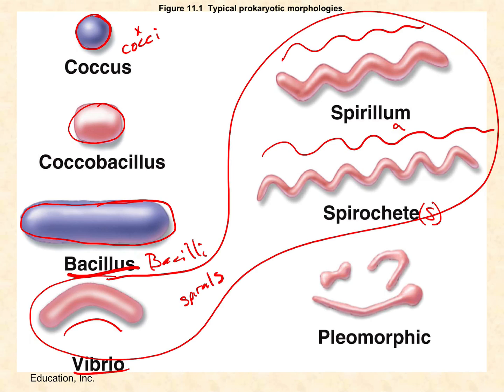Pleomorphic — 'pleo' is like 'poly,' meaning multiple shapes — refers to a single species where, for whatever reason, they're not genetically programmed to all be in the same shape. There are only a couple of species that do this, and we're not going to worry about that. What I really want you to learn are the bacilli, the cocci, and the spirals. And among the spirals, make sure you can recognize vibrios, spirilla, and spirochetes.